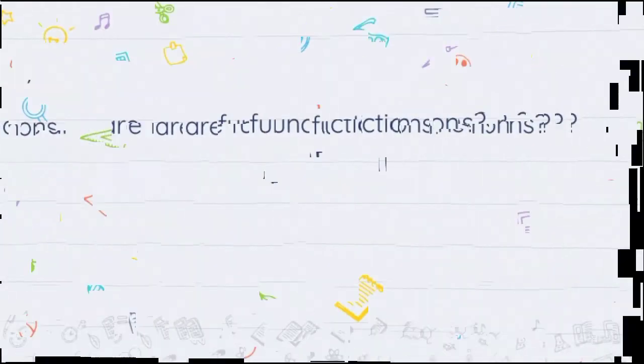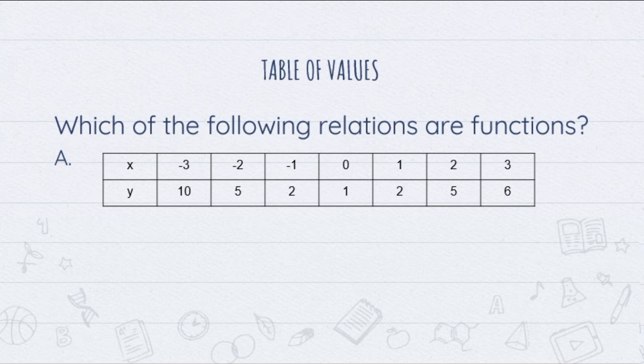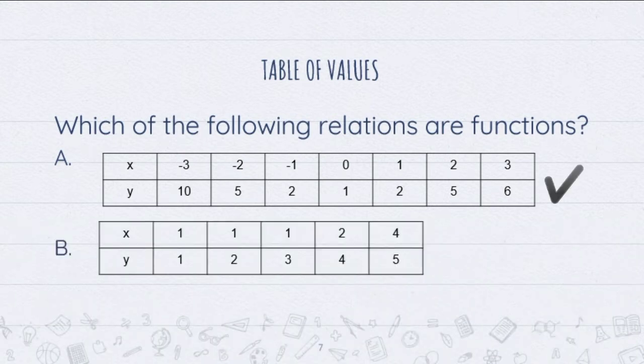Let us now proceed to number 2, table of values. This is a table with x and y values. As you can see, all values of x here are unique and non-repeating. Therefore, this is still a function. We'll now consider another table of x and y values. Obviously, 1 was repeated thrice and is paired to different values of y which are 1, 2, and 3. Therefore, this is not a function.